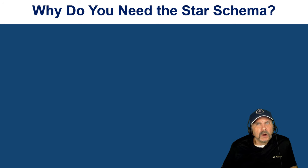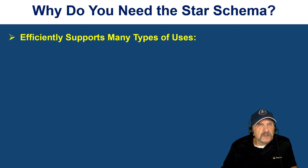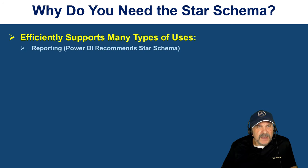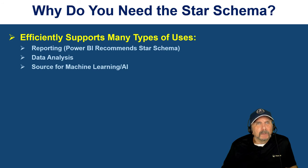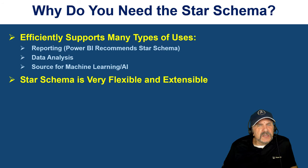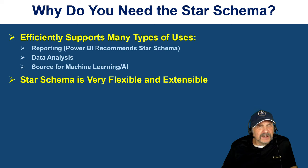Let's talk more about why we need the star schema. It efficiently supports many types of uses: reporting — in fact, Power BI recommends using the star schema — data analysis, and of course machine learning and AI. It's a great way to get your data to the point where it can be easily consumed and used by data scientists for model training. The star schema is also very flexible and highly extensible — you can add new attributes as you need to, extend the model with new dimensions, and create new fact tables at different levels of grain and connect them to existing dimensions. There's a lot of reusability here as well.